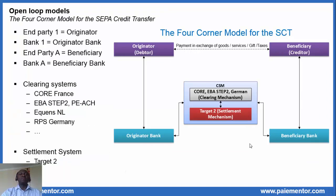The first example is the four corner model for the SEPA credit transfer. As you can see, end party one becomes the originator, bank one becomes the originator bank, end party A becomes the beneficiary, and bank A becomes the beneficiary bank. The originator bank and beneficiary bank are interconnected through the CSM systems. The clearing mechanism is implemented by clearing systems — examples include CORE in France, Equens in the Netherlands, EBA STEP2 as a pan-European automated clearing house, and the retail payment systems in Germany.